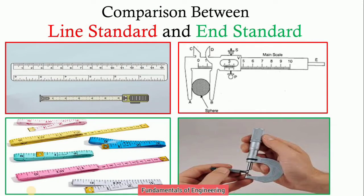We are going to see what is the comparison between line standard and end standard. These standards we are using whenever we measure any dimensions using any instrument. So why are they divided into line standard and end standard? What is the principle and what are the different comparison parameters that we are going to see in this session?